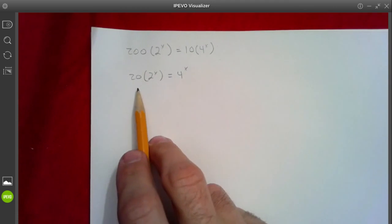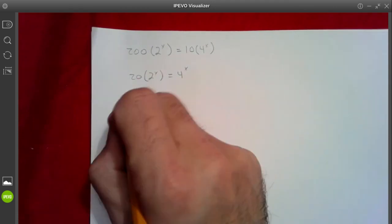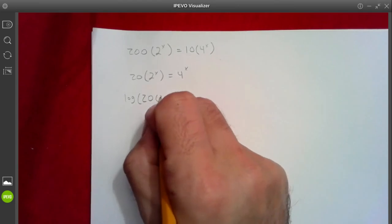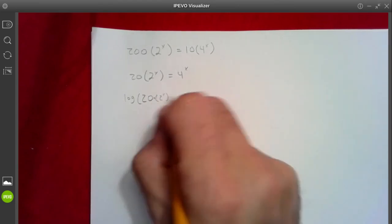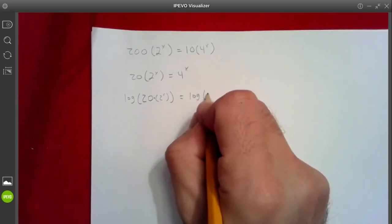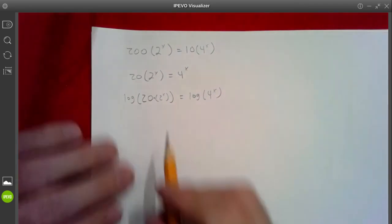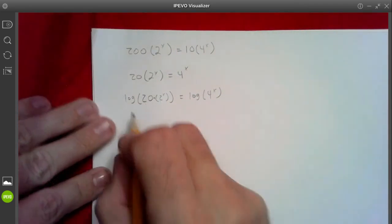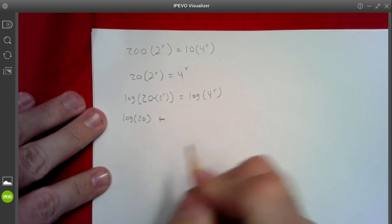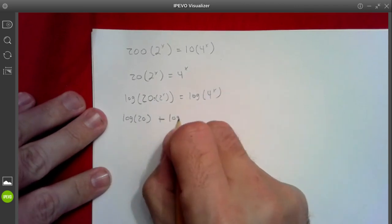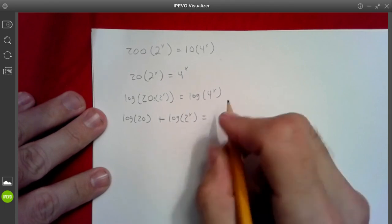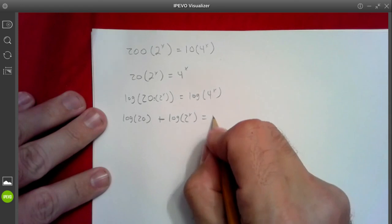Alright, now let's go ahead and take the log of both sides. We'll have log of 20 times 2 to the x, and those are connected by multiplication, and log of 4 to the x. On the left hand side, that's going to separate out into a log 20 plus, because it's multiplication, log 2 to the x. And this will be x log 4.